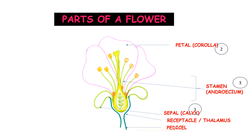The third whorl is the androecium, which is formed of stamens — this is the male reproductive part of the plant. A helpful tip: the word 'stamen' has 'men' at the end, which can help you remember that the stamen or androecium is the male reproductive part of the plant.